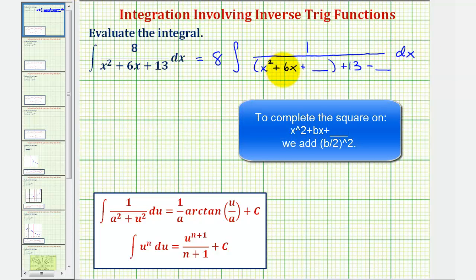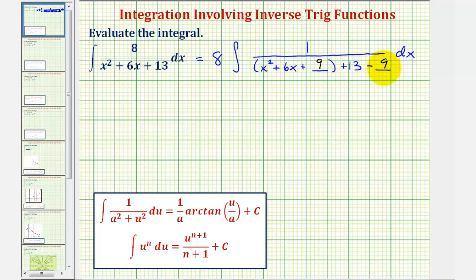So again, to complete this square on x squared plus six x, we would take half of six, which is three, and then square it, and three squared is nine. So we'll add nine here. If we add nine here, we'll have to subtract nine here to maintain equality.